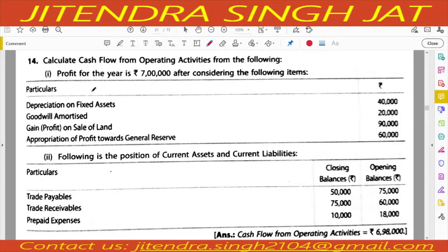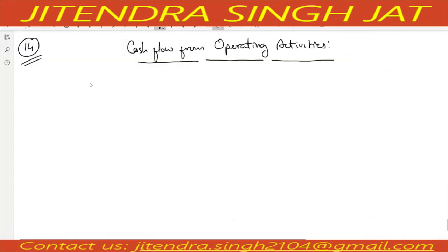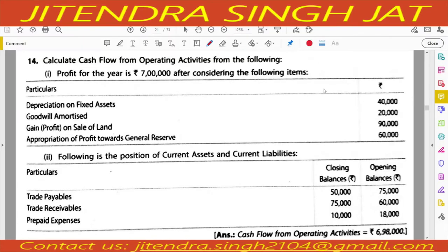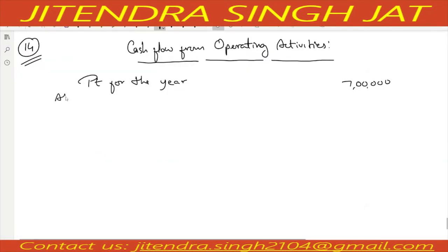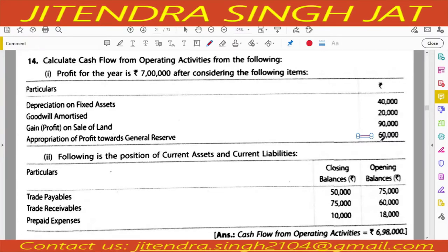We begin with profit for the year, which is given as 7 lakhs. What we add at the beginning? Appropriation — only one appropriation is given, which is appropriation of profit towards general reserve of 60,000. So we add transfer to general reserve: 60,000.